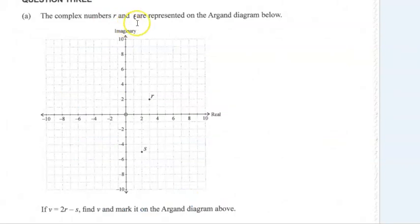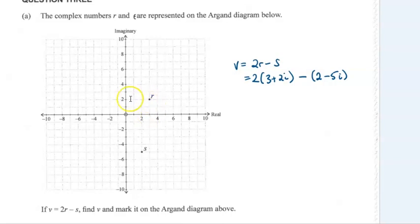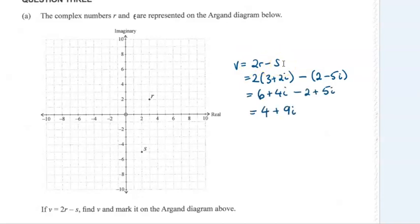Question 3a. The question is asking us to find v, which is equal to 2r minus s. First write down what r and s are: r is 3 plus 2i, s is 2 minus 5i. Pop that into the equation for v — you can do this on your calculator fairly quickly, but it doesn't take much by hand either. That's 4 plus 9i.